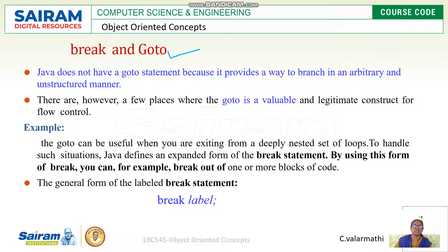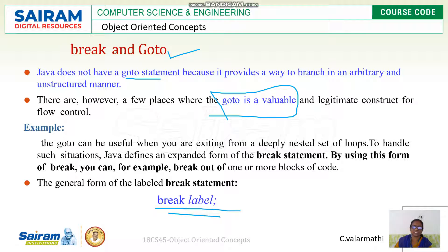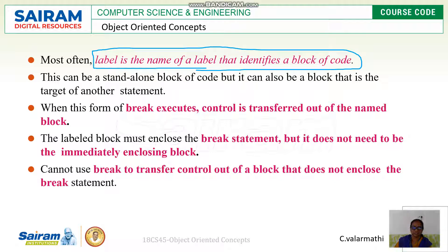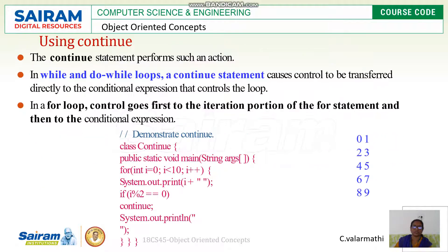Break and goto are jump statements. Java does not have a goto statement, but in some cases goto is valuable, so Java provides the break statement with a label. A label identifies a block of code — the labeled break will transfer execution to that identified block, effectively breaking non-linearly.